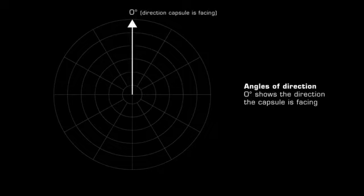Zero degrees indicates the direction in which the capsule is facing, which is usually the angle at which it is most sensitive to sound and produces the greatest output. The sides of the microphone are shown at 90 and 270 degrees and its back at 180 degrees.